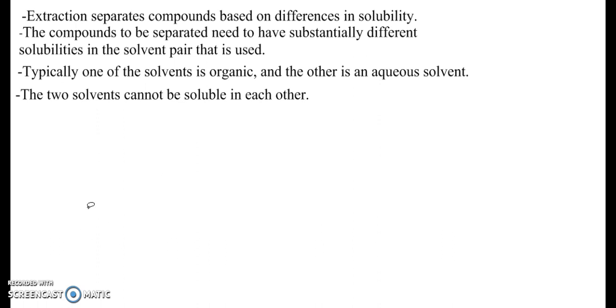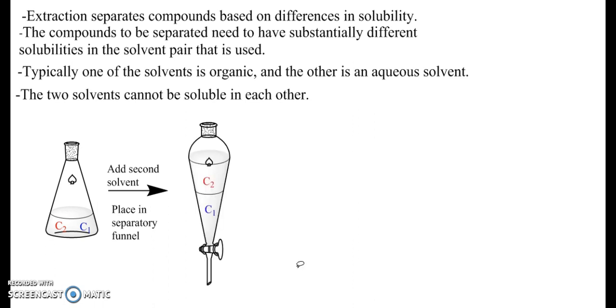Conceptually, or I should say visually, what we're doing is the following: we're starting with a solution of the two compounds that we want to separate. In this case, one of them is represented as C1 and the other is represented as C2. We add the second solvent that's going to be part of our extraction, and we place the entire mixture into a separatory funnel.